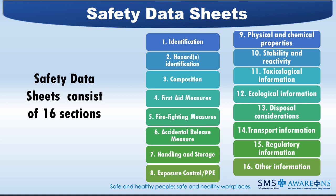The 16 sections are: identification, hazards identification, composition, first aid measures, firefighting measures, accidental release measures, handling and storage, exposure control or PPE, physical and chemical properties, stability and reactivity, toxicological information, ecological information, disposal considerations, transport information, regulatory information, and other information.